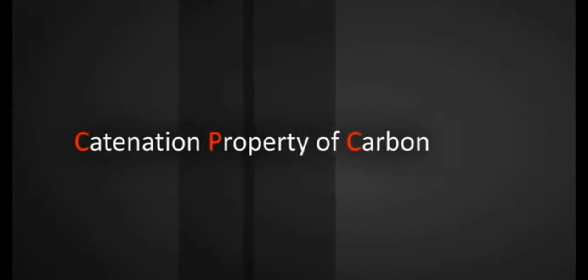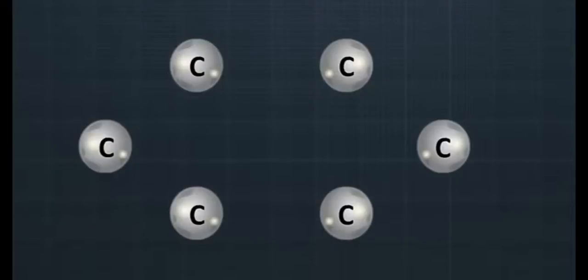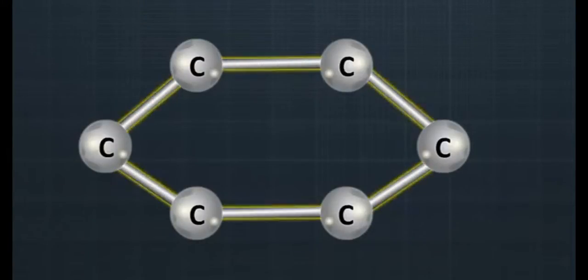Catenation property of carbon. Catenation is a remarkable property of carbon to form bonds with itself. This property of forming bonds with atoms of the same element is called catenation.